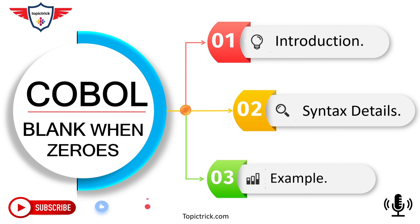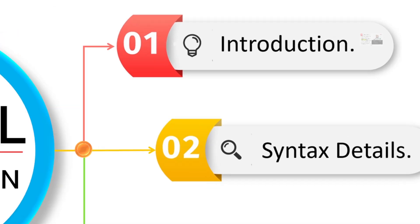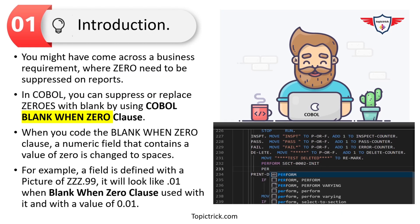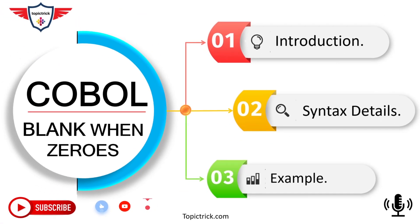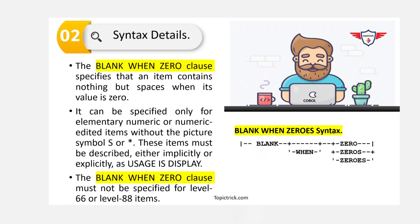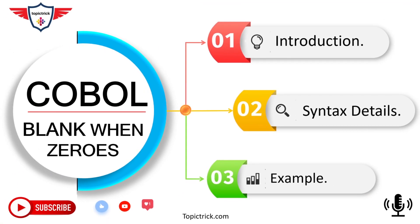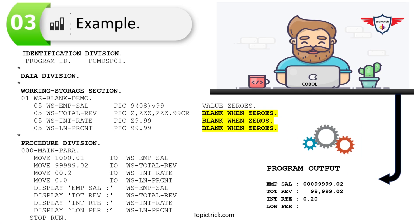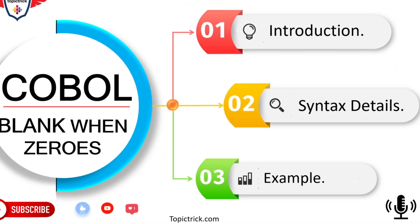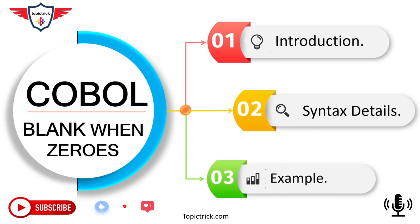Today's COBOL tutorial is divided into three different sections. First is an introduction to the BLANK WHEN ZERO clause. Then we'll cover BLANK WHEN ZERO syntax details and syntax rules. The last section is a BLANK WHEN ZERO example, where I'll walk you through a COBOL program so you can clearly understand how to use this clause.